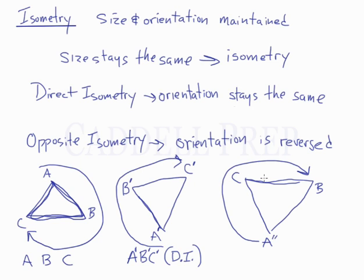Call this A double prime, C double prime, B double prime. We have A, C, B. So instead of the same order of ABC, we have ACB. So this is an example of the orientation being reversed. This is opposite isometry.